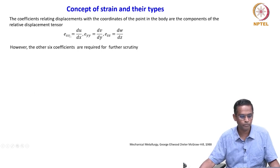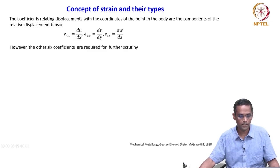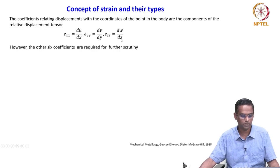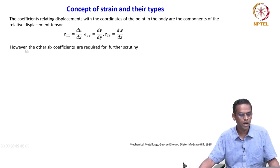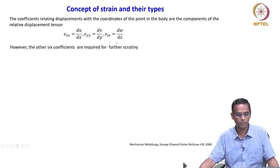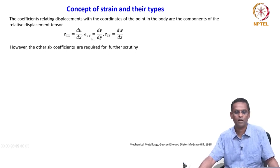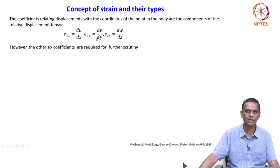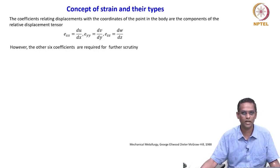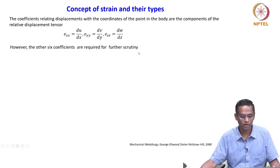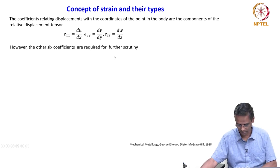We can see that e_xx equals ∂u/∂x, e_yy equals ∂v/∂y, and e_zz equals ∂w/∂z. However, the other six coordinates are required for further scrutiny — this is only the normal strain. The description is not complete here; we need six more coefficients corresponding to the shear components.